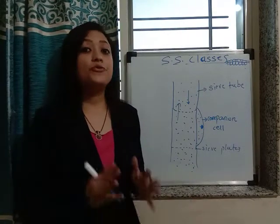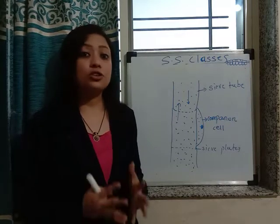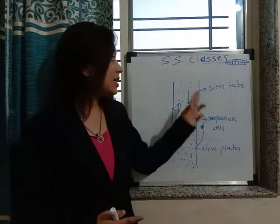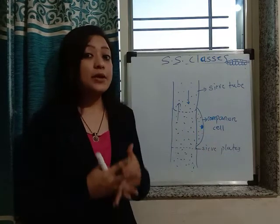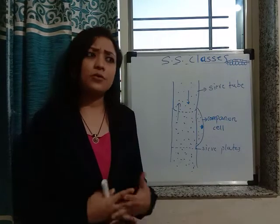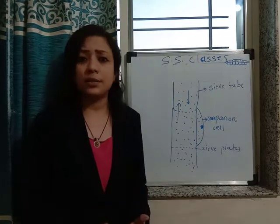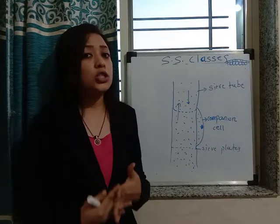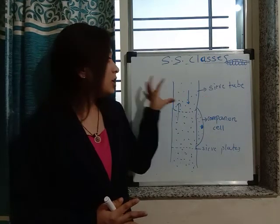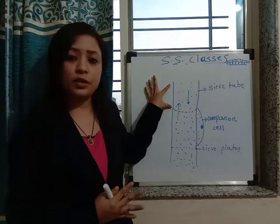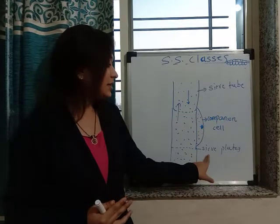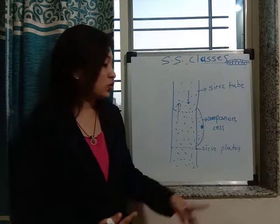For the conduction of food material, there is specialized tissue present in the plant body called phloem. The components of phloem are sieve tubes, companion cells, sieve plates, phloem fibers, and phloem parenchyma. Parenchyma stores food material and is supportive in nature. Fibers help in sideways conduction and are also supportive. The main function of food conduction is played by sieve tubes, which are formed by cells of the phloem whose walls are partially digested, forming a sieve-like structure called sieve plates.